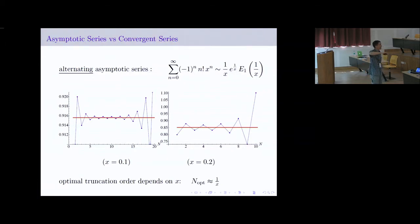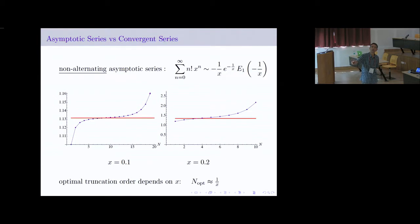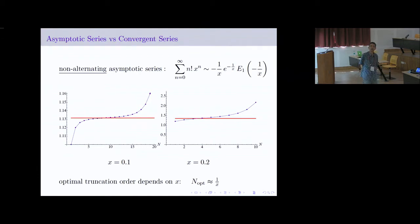For the non-alternating case, similar behavior — now it's not oscillating around the actual value, it's just going monotonically, but again optimal truncation occurs at roughly one over x. This is completely generic behavior from asymptotic series. In QED, where the expansion parameter is alpha over pi — a very small number — we should be good for several hundred orders in perturbation theory, though we're only up to fifth order. In QCD, things are very different.